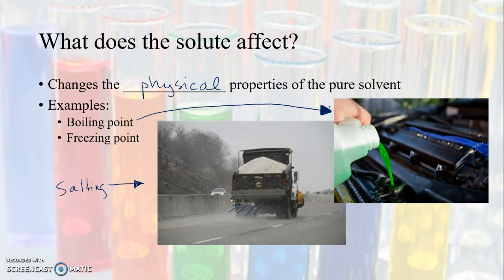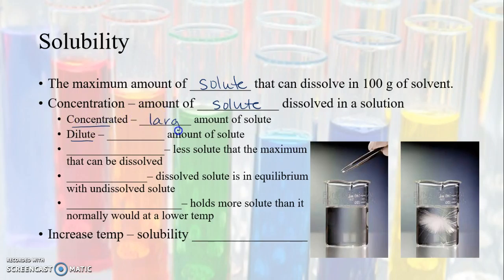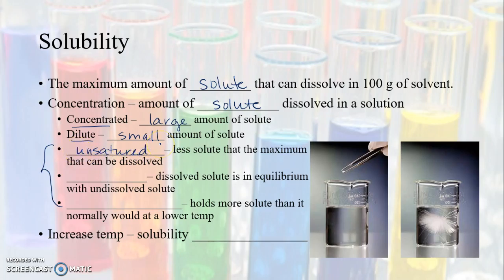Solubility is the maximum amount of solute that can be dissolved in 100 grams of solvent. We can also talk about concentration — the amount of solute dissolved in a solution. A concentrated solution has a large amount of solute; a dilute solution has a small amount. In terms of saturation: an unsaturated solution has less solute than the maximum that can be dissolved, and a saturated solution is at equilibrium — it has as much solute as it can hold.